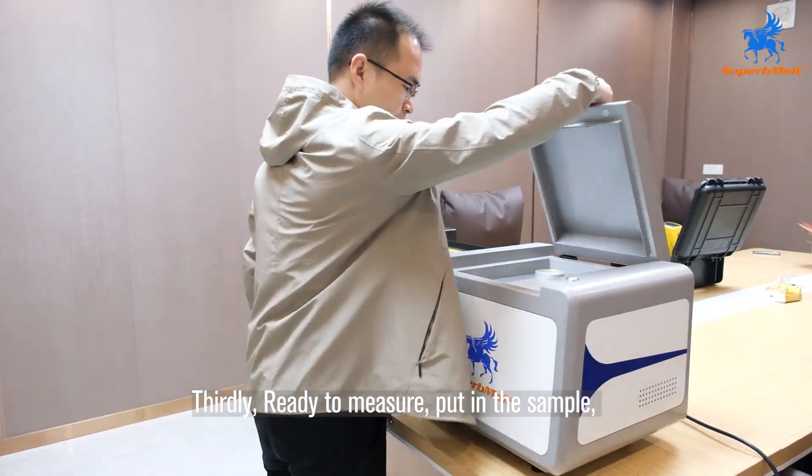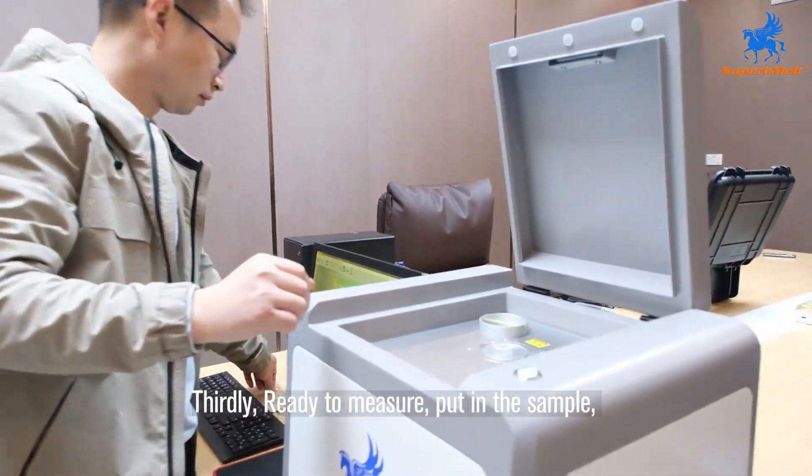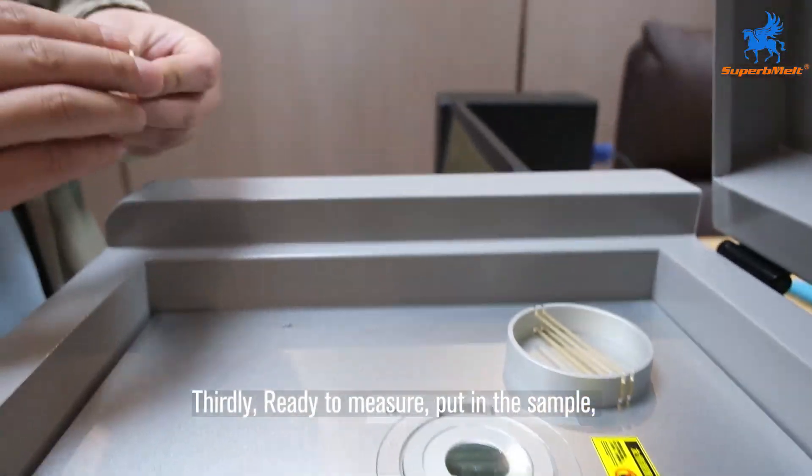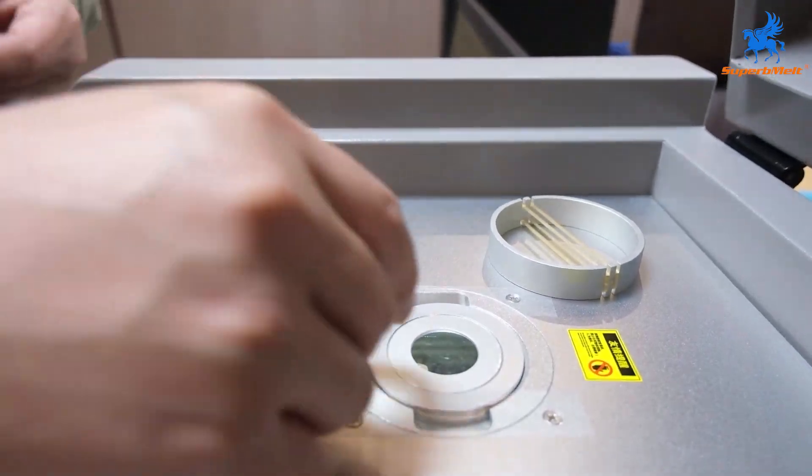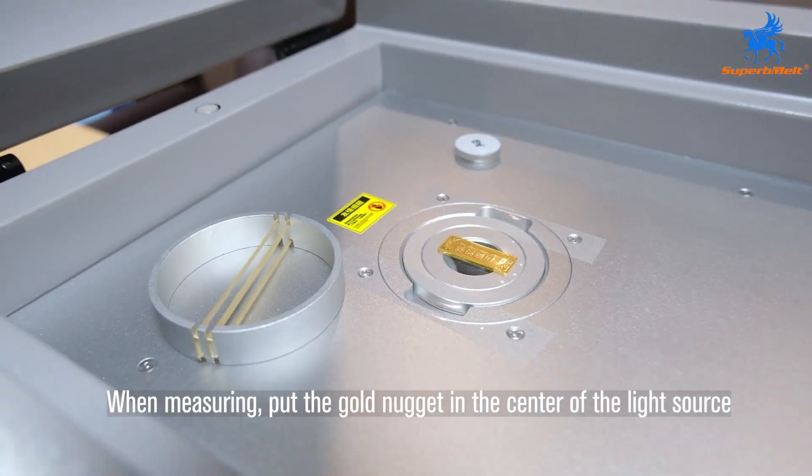Thirdly, ready to measure. Put in the sample. When measuring, put the gold nugget in the center of the light source.